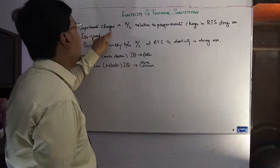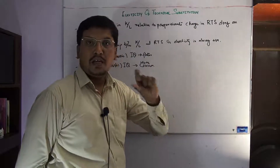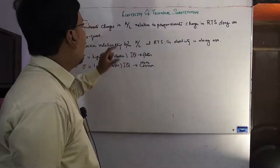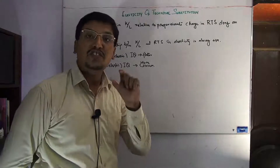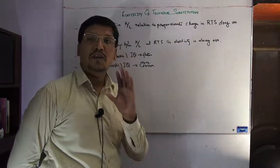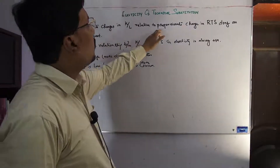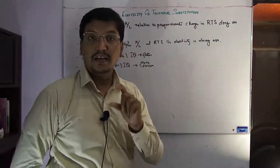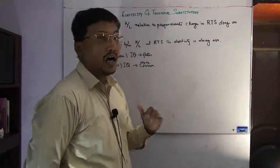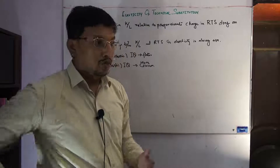It shows the proportionate change in K over L — that is, the capital-labor ratio — which is a very important term. When we have a change in the capital-labor ratio, we are not saying a change in capital alone or labor alone, but a change in their ratio relative to the proportionate change in RTS, the rate of technical substitution. RTS means how much labor is substituting capital.